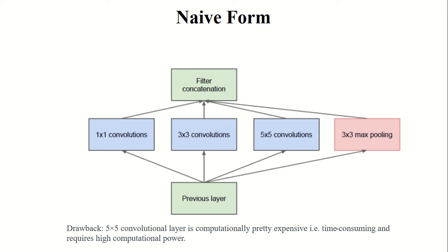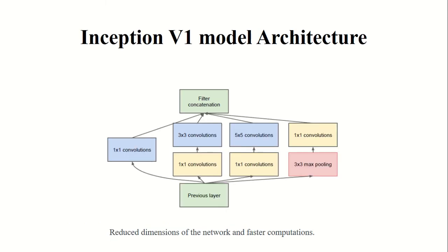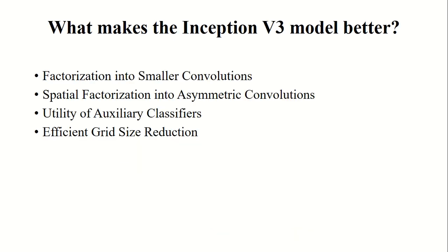The drawback is that the 5x5 convolution layer is computationally expensive and time-consuming to train, requiring a lot of computational power. To address this, the 5x5 convolution was reduced by adding a 1x1 convolution layer placed before every other convolution layer, reducing the dimensionality of the network. This modification was done in Inception V1, and the model was further improved in V2, leading to the final V3 model.